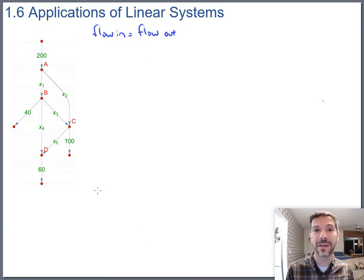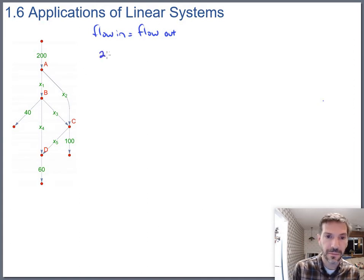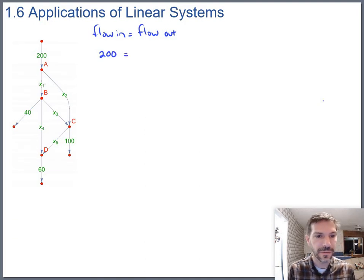And then this one's nice. You can actually kind of jump straight to writing down the linear equations. Just starting with the first node with A, so what's the flow into that one? It looks like just 200, which has to equal the flow out of that, which is x1 plus x2.